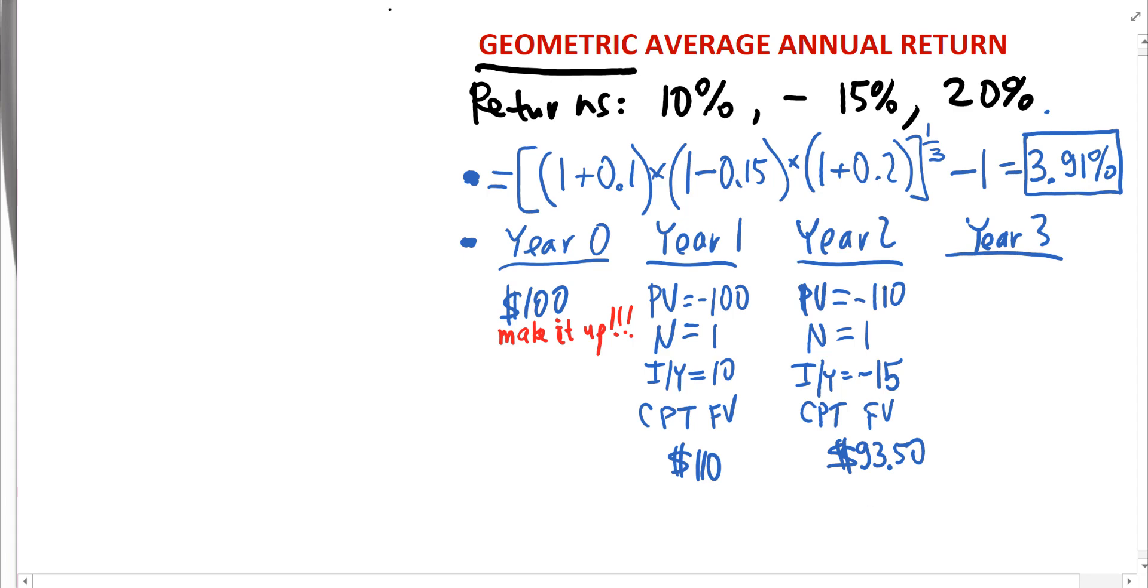And then we repeat the same thing one last time for year 3. So PV is negative 93.5. N is again 1 because we are looking at the change in stock price over 1 extra year. IY is the third return that's given, which is 20%. Okay. So I put 20 and I'm again computing the future value.